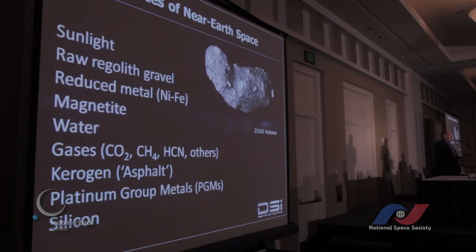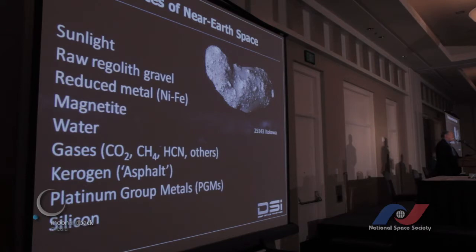The resources of near-Earth space - I'm using that as a specific reference to John S. Lewis's book of the same title. The resources of near-Earth space range through sunlight, raw regolith gravel, reduced nickel-iron metal, magnetite, oxidised metal, water, gases, all the volatiles, kerogen (which is a sort of asphalt-like material), the complex hydrocarbons in the carbonaceous chondrites, platinum group metals and silicon. We have a significant range of different possible products to choose between in our asteroid mining ventures.